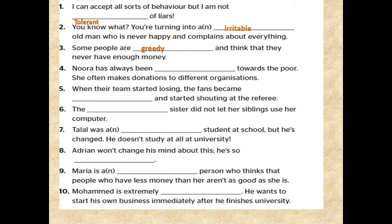4. Noora has always been generous towards the poor. She often makes donations to different organizations. 5. When their team started losing, the fans became aggressive and started shouting at the referee. 6. The selfish sister didn't let her siblings use her computer. 7. Talal was a conscientious student at school but he changed — he doesn't study at all at university. 8. Adrian won't change his mind about this. He is so stubborn.